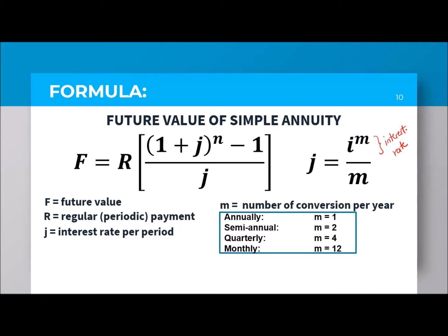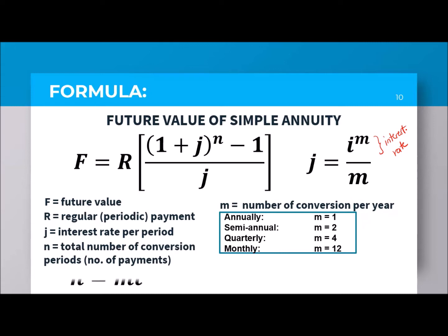Take note: annually, M is equal to 1; semi-annual, M is equal to 2 since you pay twice a year; quarterly has 4 parts so M is equal to 4; and monthly, there are 12 months so M is equal to 12. N pertains to the total number of conversions — that is the number of payments — with the formula N equals M times T.